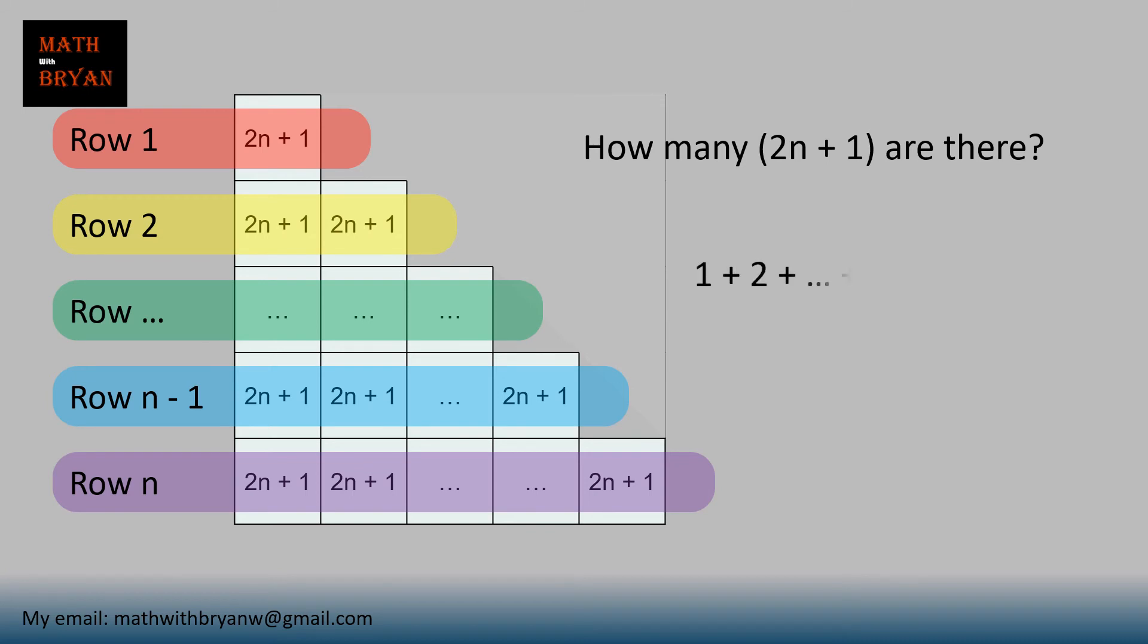Well, in row 1, there's 1. In row 2, there's 2. All the way to row n, and there's n. So, what is 1 plus 2 all the way to n? Well, that is n times n plus 1 divided by 2.